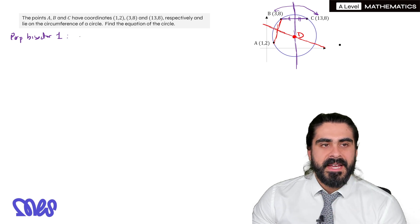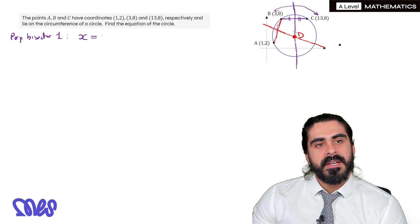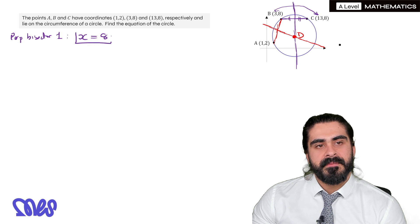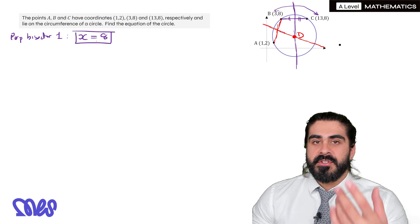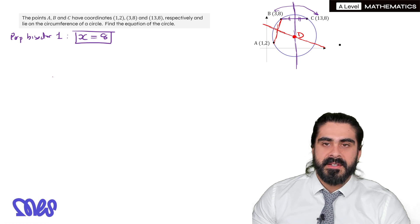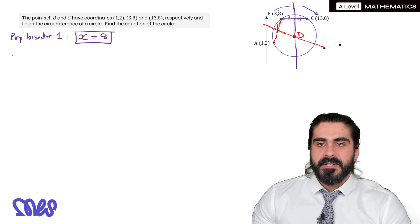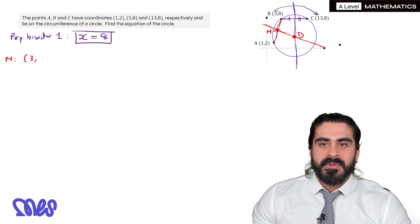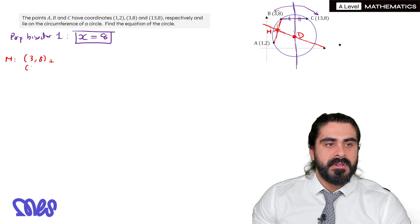That means we then have to do the same process to find the perpendicular bisector of AB. We need to find the midpoint, we'll call that M. We're going to add the coordinates 3, 8 plus 1, 2. So we get 4 and 10. So M is 2, 5.